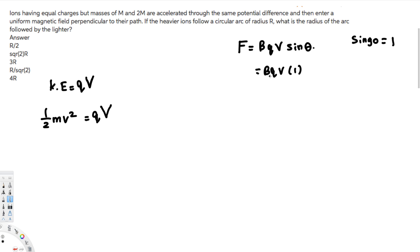Whenever charges travel through a magnetic field, they experience a deflection and travel in a circular path, so they also have centripetal force. The centripetal force equation is F_c equals mv squared over R. We need this equation because we are trying to find the radius.